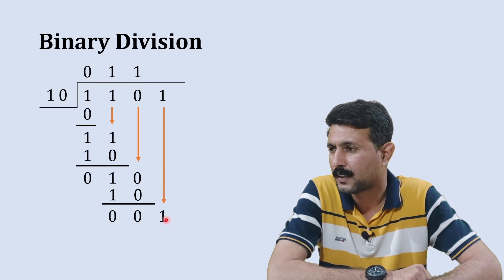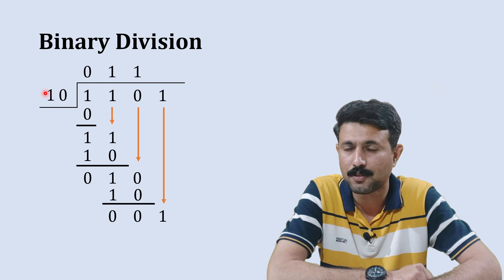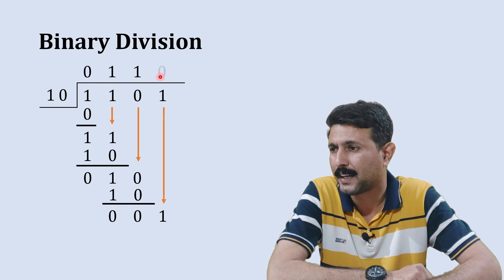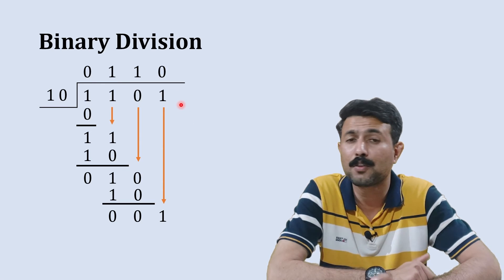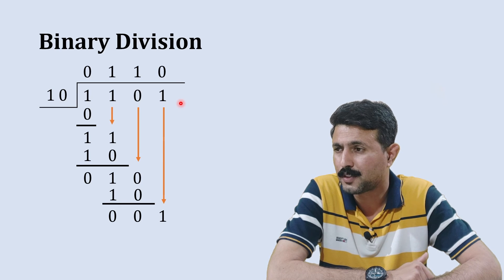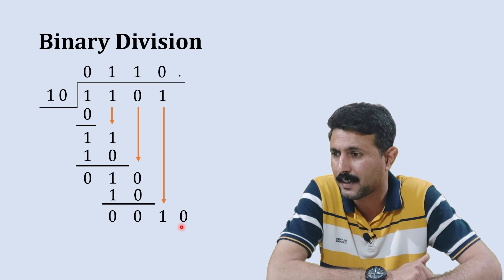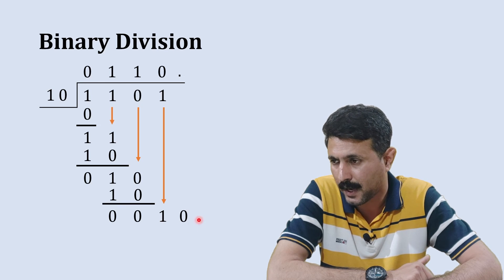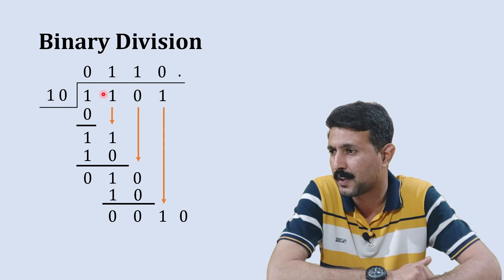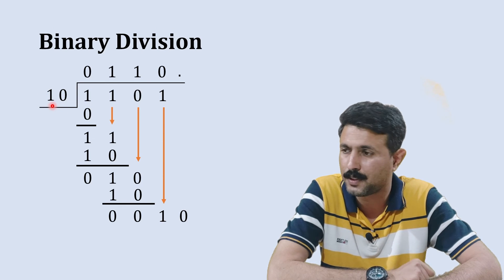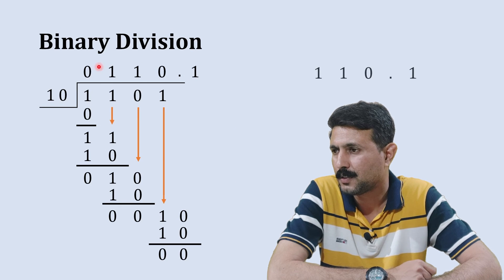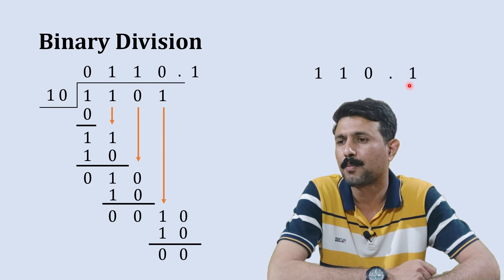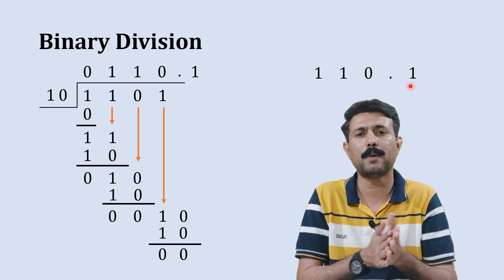We now have 1 remaining. Check: is 1 greater than 1 0? No, so write 0 in the quotient and since no more terms are left, place a decimal point and bring down a 0, making it 1 0. Since 1 0 equals the divisor 1 0, write 1 in the quotient. 1 0 × 1 = 1 0; 1 0 minus 1 0 is 0 0. The final answer of this binary division is 1 1 0 . 1.